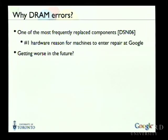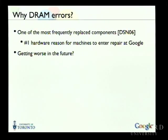This talk is about DRAM errors. Out of all hardware components, why DRAM in particular? DRAM is one of the most frequently replaced components — at Google, it's the number one hardware reason for why machines enter repairs. Another reason is that many people expect DRAM errors to get more frequent in the future, because chips get denser and we put more and more DRAM into servers.